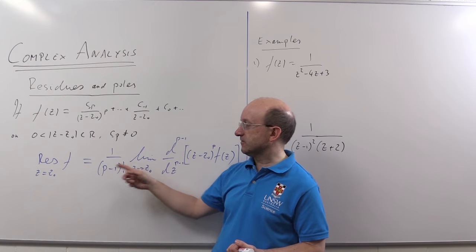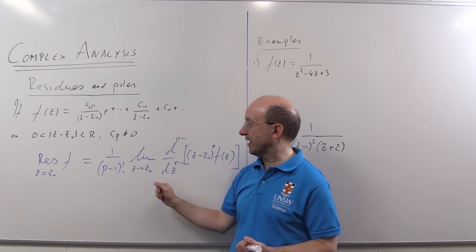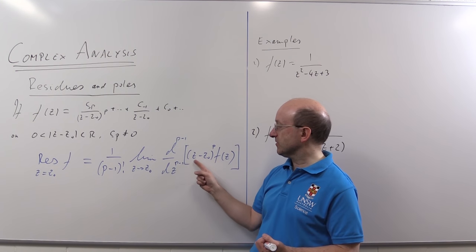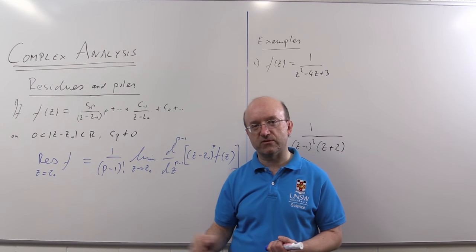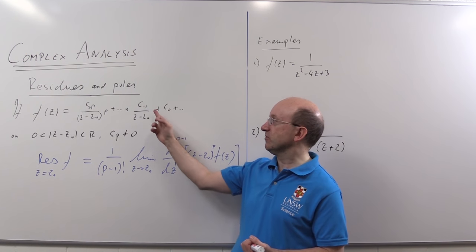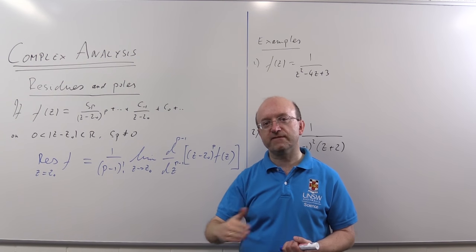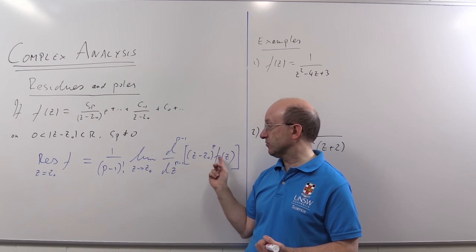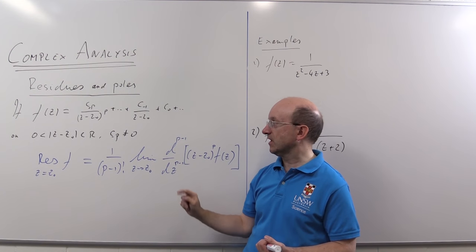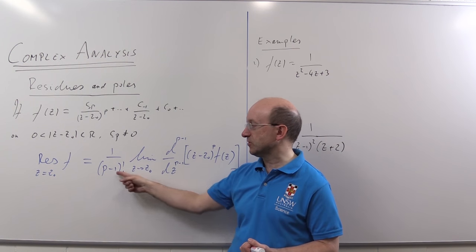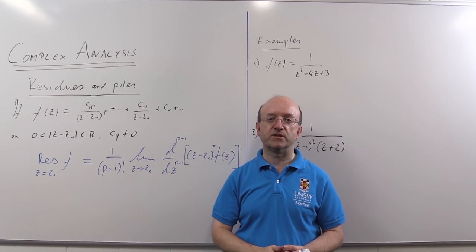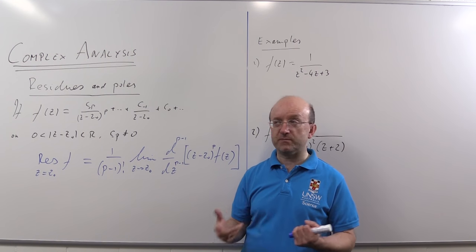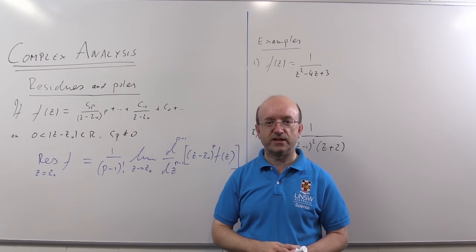But we also have this formula here that the residue is given by, well it looks a little complicated but if you think about it it's not actually difficult to see what you do. You multiply by Z minus Z naught to the P to essentially clear all the fractions away, and then you want to pick this term C minus one up. So if you differentiate enough times all the lower order powers in this product will disappear, and then we just want what we get when we send Z to Z naught. Of course differentiating P minus one times will bring in a factor of P minus one factorial, so you've got to divide that out. So it's not a difficult formula to come up with, even if you forget the details of it. Just remember, clear the fractions, differentiate to get to the coefficient you want.